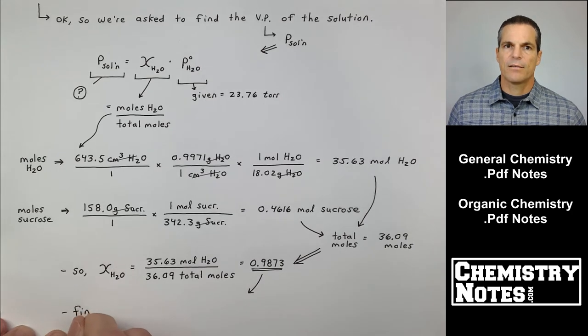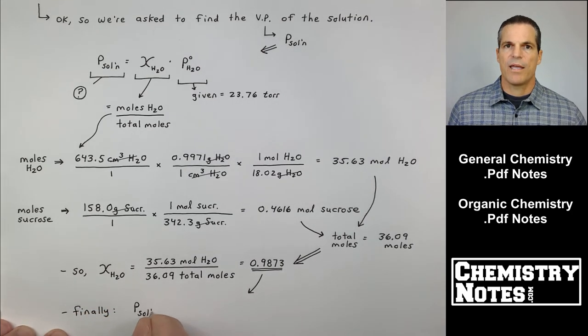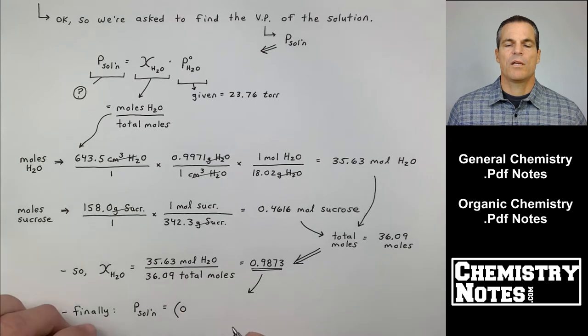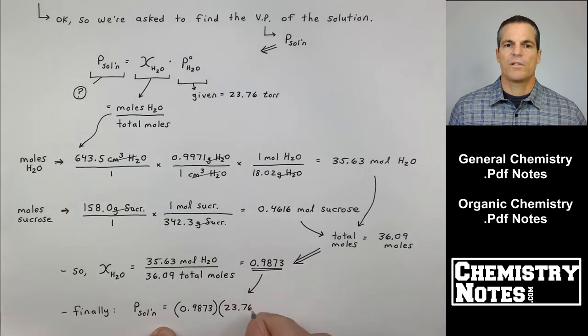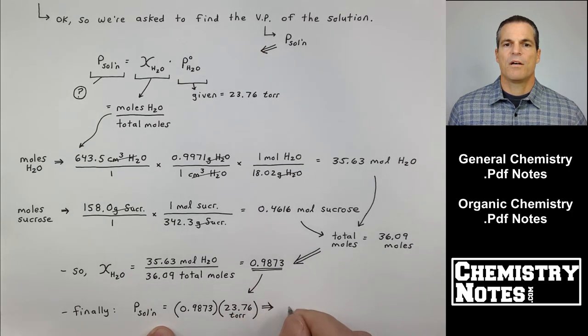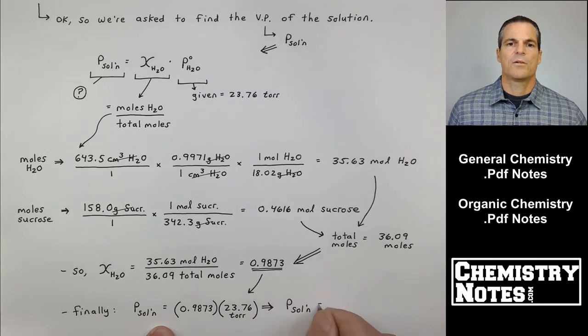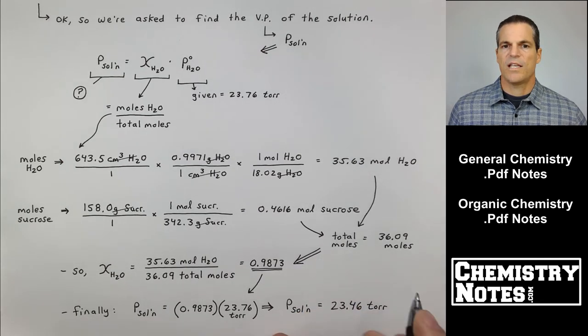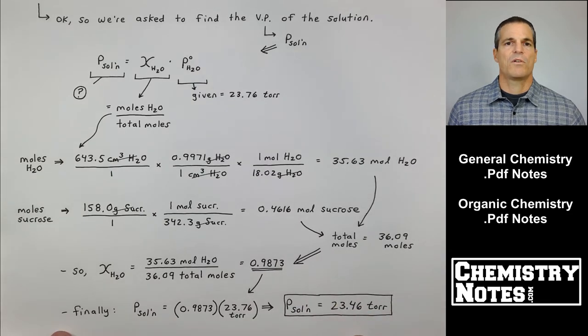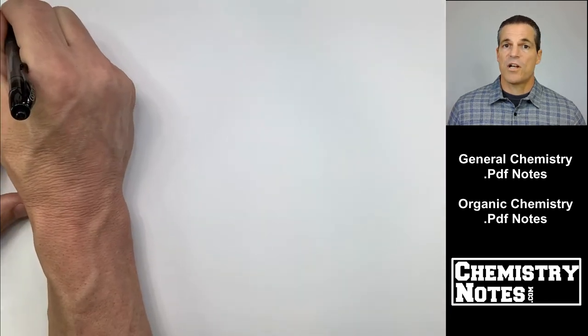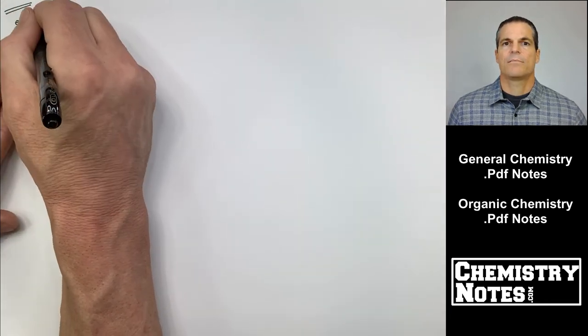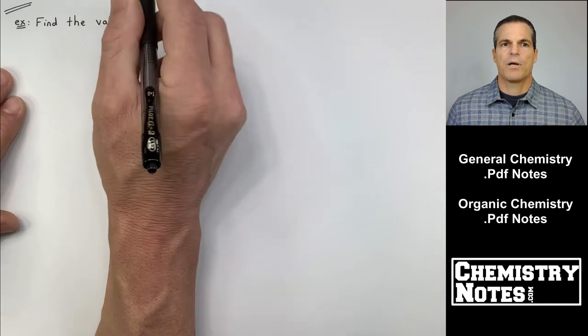Finally, I can use Raoult's law and get my answer. P_solution equals 0.9873 times vapor pressure of pure solvent, 23.76 torr. Vapor pressure of this solution is equal to 23.46 torr. Use the same units as I was given for vapor pressure of water, torr. Let's finish off this video with one last sample problem, one last practice problem.